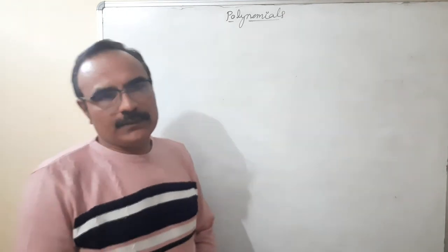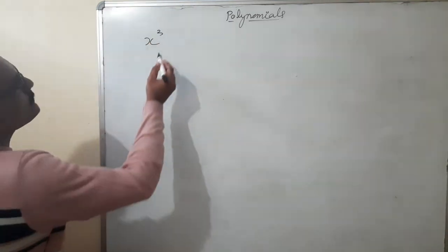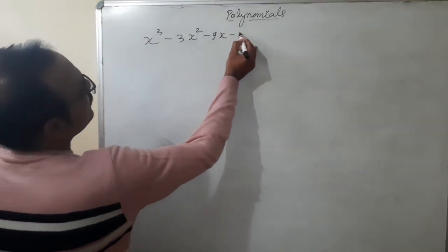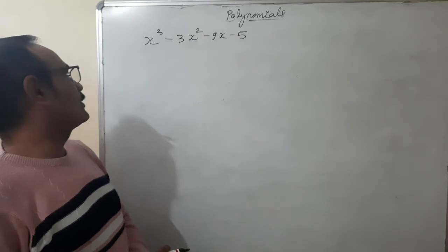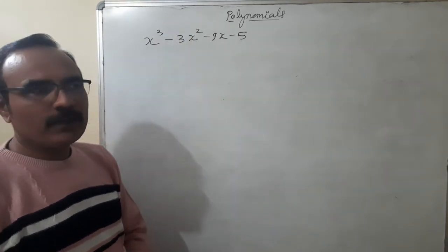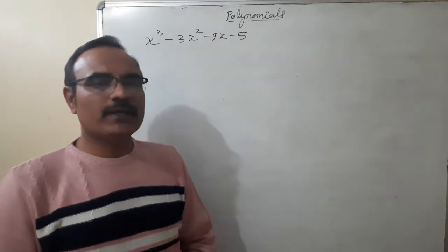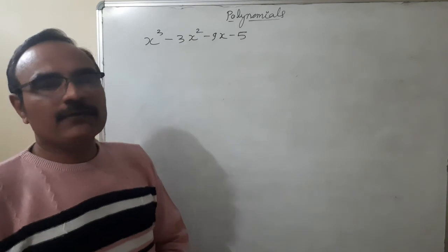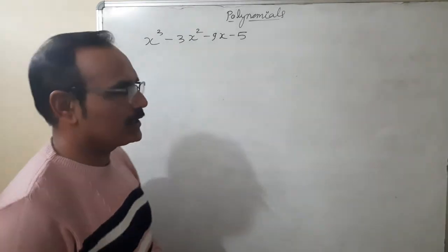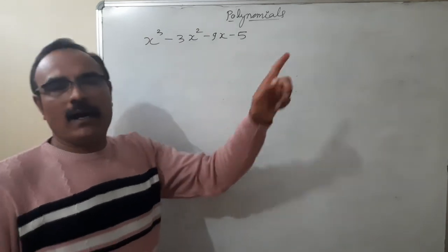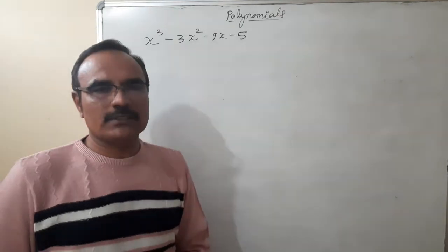Now I am taking a cubic polynomial example: x³ minus 3x² minus 9x minus 5. It is a cubic polynomial because the highest power is 3. We are finding two things: first, factorize it — three factors are possible; second, find the three zeros. How many zeros are possible? There are three zeros possible.